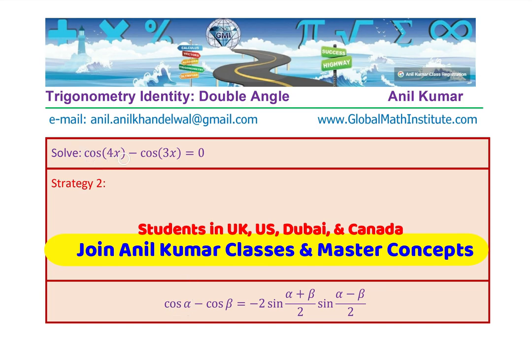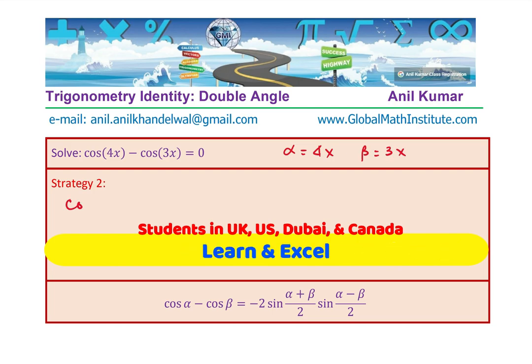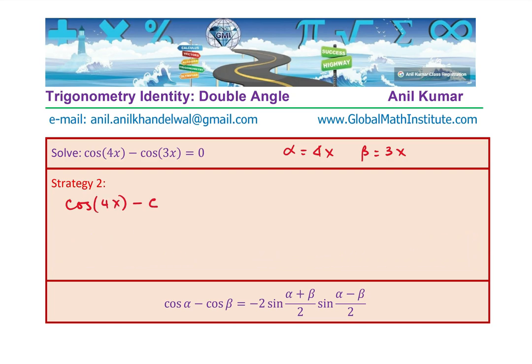We are given cos 4x minus cos 3x. Basically, you see that alpha is for you 4x and beta is 3x, correct? And therefore, we can now write cos of 4x minus cos of 3x equals to 0 as what?